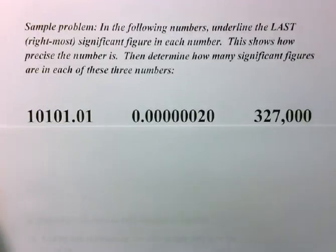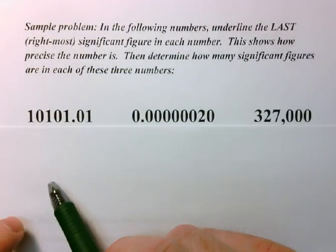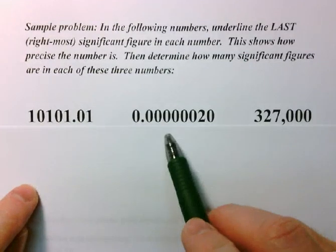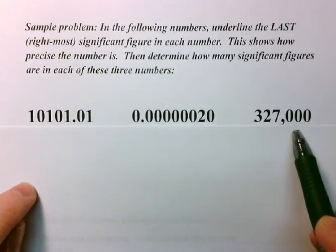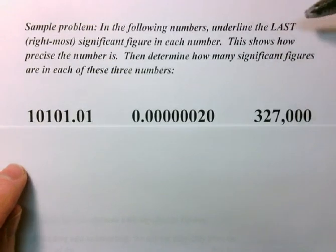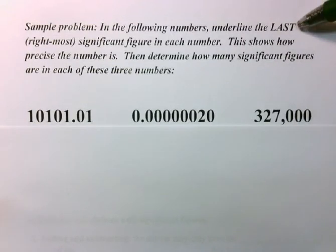Okay, so now that we have learned how to identify a significant figure, I'm going to give you a sample problem with a few numbers and give you the opportunity to practice what you've just learned. So here I've given you three numbers. Each have several digits in them. And in each number, I would like for you to underline the last, that is the rightmost sig fig or significant figure in each of these numbers.